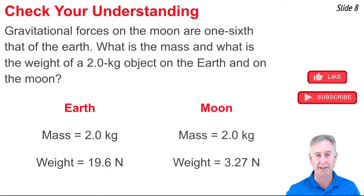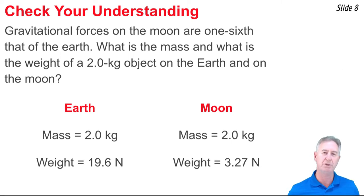Now on the Moon, as mentioned, the mass is the same. But the weight is one-sixth that of the Earth because gravitational forces on the Moon are one-sixth that of the Earth. So we take the 19.6 newtons and we divide it by 6, and that gives us the weight of this object on the Moon. It's 3.27 newtons.